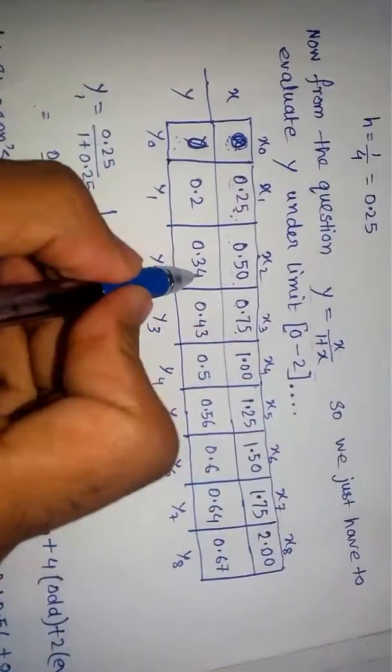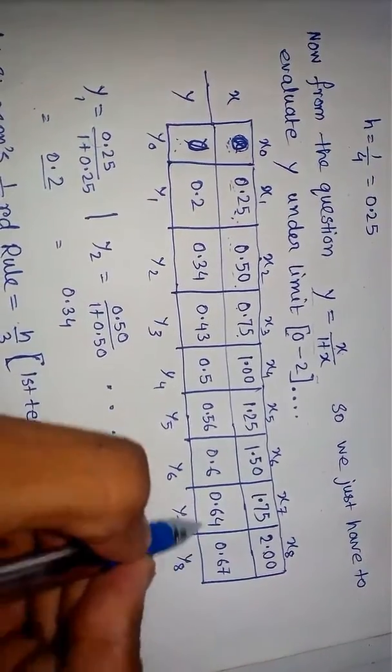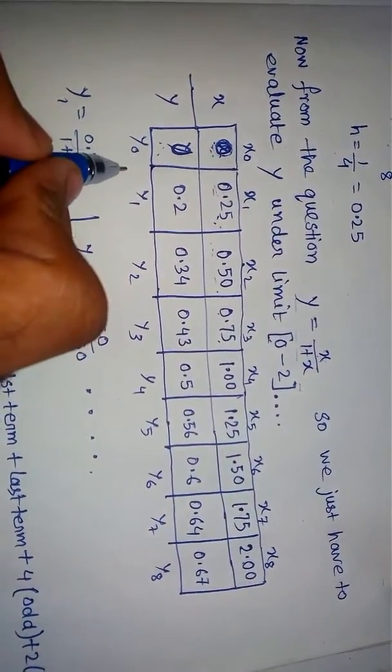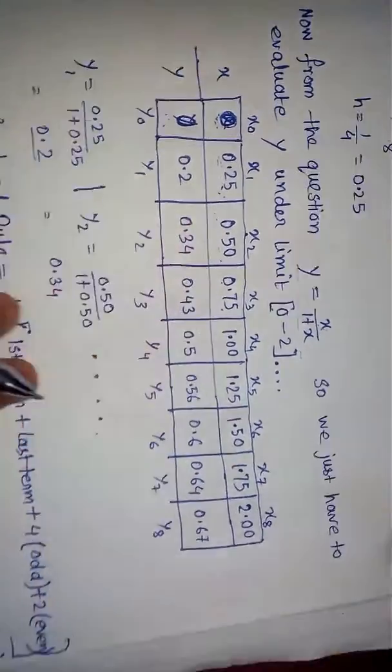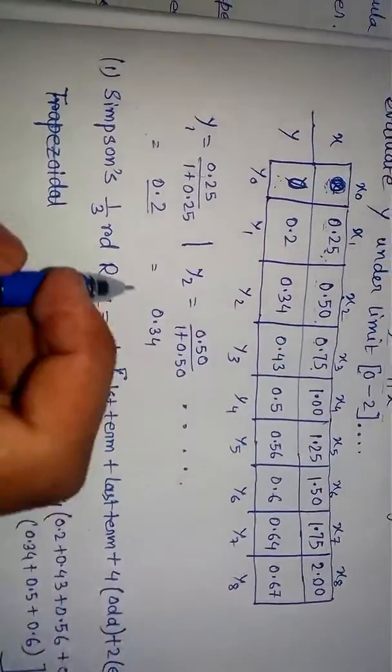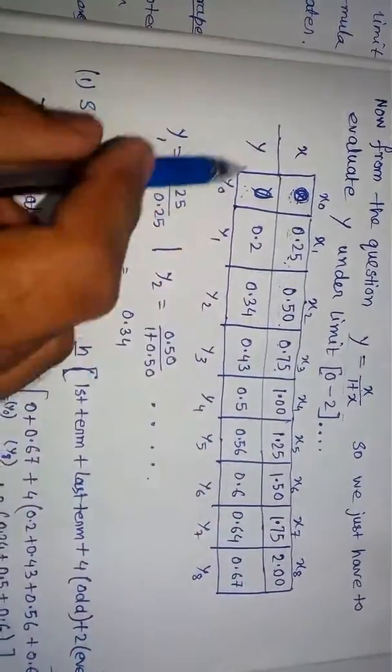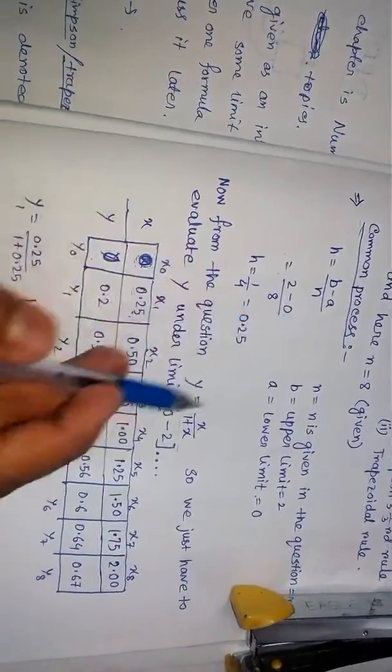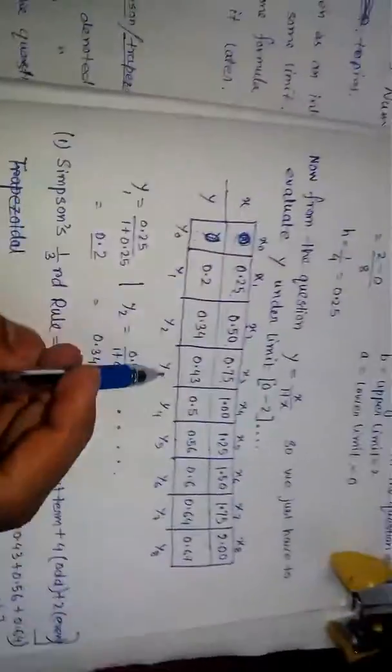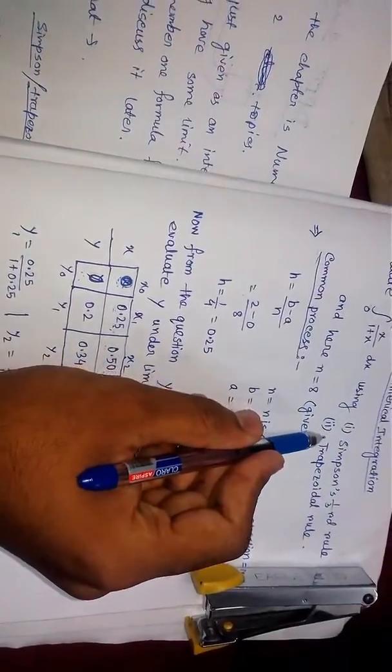I calculated all these values and they came out this way. I named them y₀, y₁, y₂, and so on up to y₈. Now we come to the question. All of this was the common process part.